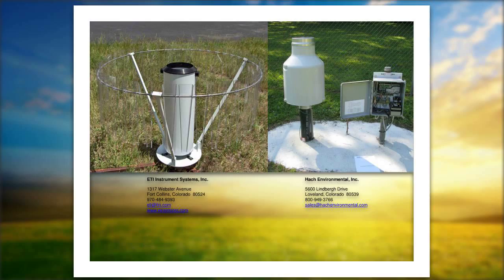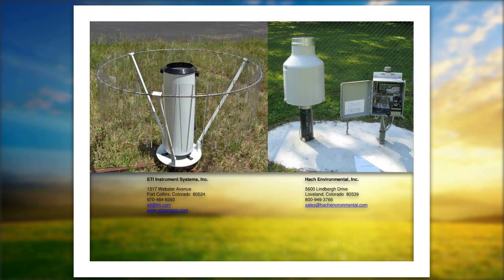Before you ever think about downloading any data from a rain gauge, always make sure you collect your sample bucket first. The validity of the sample is the most important thing. Go out, open your collector, observe the contents, cap the sample, get the new bucket in place, and make sure you record your off time. The off time for your bucket is the next on time for the next bucket in line. Once the new bucket is in place, then you can move on and download your data from the rain gauge.